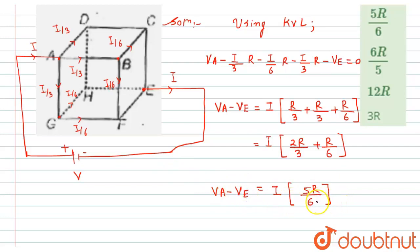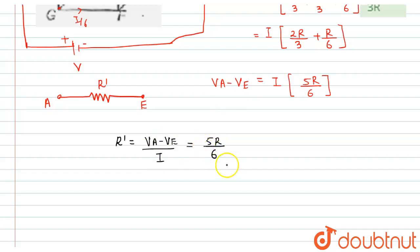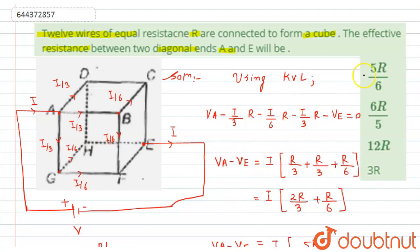So the potential difference between points A and E is V_A minus V_E = 5R/6 times i. Now, letting the equivalent resistance between A and E be R', and applying Ohm's law: R' = (V_A - V_E) / i = 5R/6. Therefore, the effective resistance between the two diagonal ends A and E is 5R/6, which corresponds to option one — the correct answer.